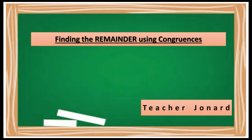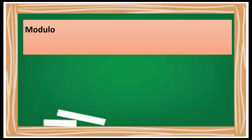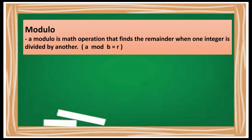Hi, this is Teacher John Art and welcome again to this video. For today's video we'll be studying about finding the remainder using congruences. To start this lesson we'll have to define first modulo. A modulo is a math operation that finds the remainder when one integer is divided by another integer. So if you have integer a and integer b, you will have a mod b to get the remainder r.